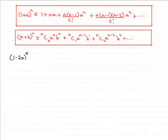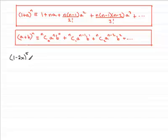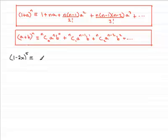In this first part of the question, we're asked to use the binomial expansion to find the first four terms in the expansion of 1 minus 2x to the power 5. To do this, using the binomial expansion, you have a choice of two formulas.